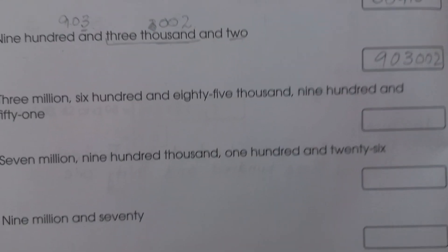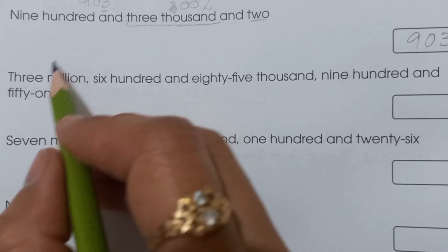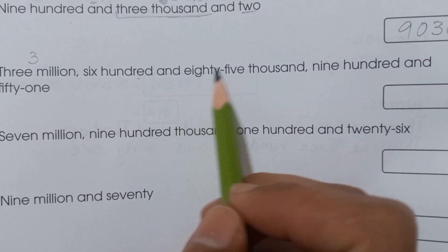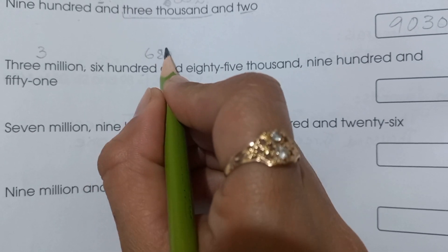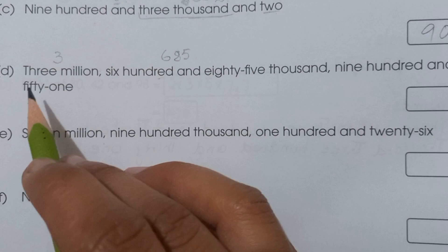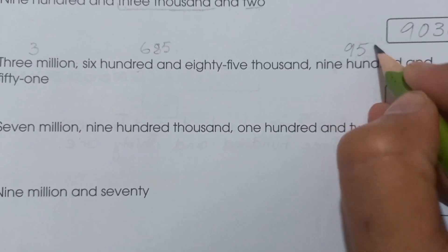Next, part (d): three million, six hundred and eighty-five thousand, nine hundred and fifty-one. In the millions place, we write three, then 685,951. So: 3,685,951.